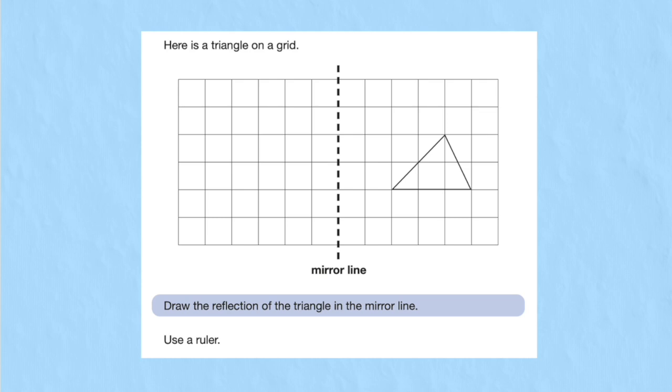This first question is a reflection question. It says here is a triangle on a grid. We can see it says mirror line - this is a really big piece of information. Then it says draw the reflection of the triangle in the mirror line, and very crucially it says use a ruler which I can't do today but you will do in your test.